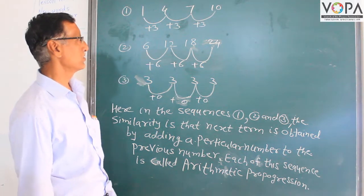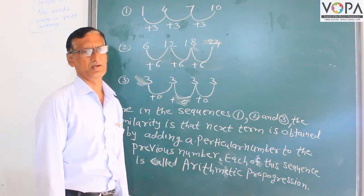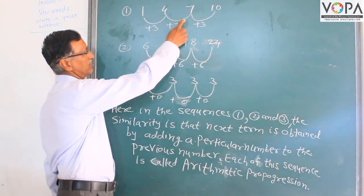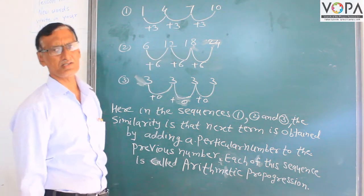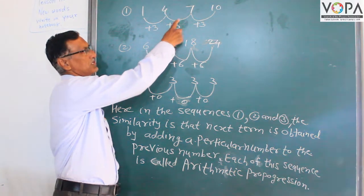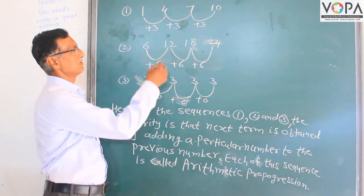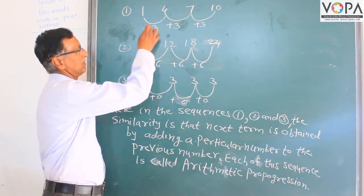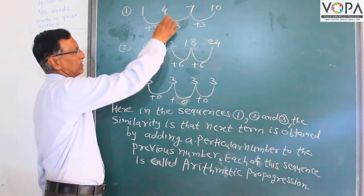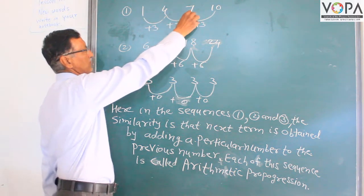We have learned arithmetic progression. In the sequence 1, 2, 3, 4, 5, 6, 7 the same number is being added. Another sequence is 1, 4, 7, 10: 1 plus 3 equals 4, 4 plus 3 equals 7, 7 plus 3 equals 10. The same number 3 is added each time. The difference between any two consecutive terms is 3: 4 minus 1 is 3, 7 minus 4 is 3, 10 minus 7 is 3.